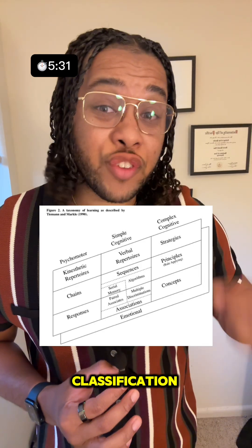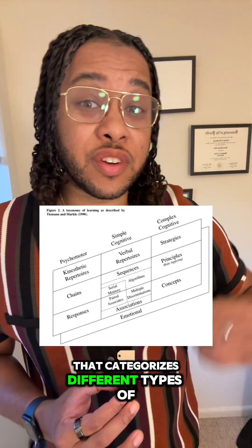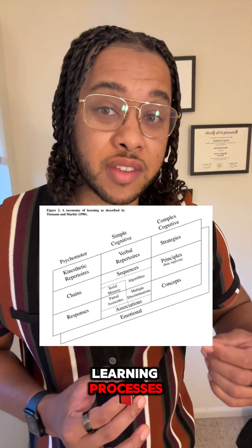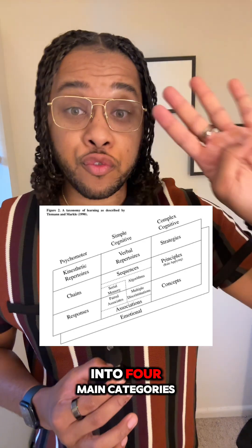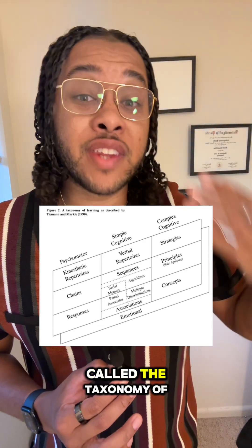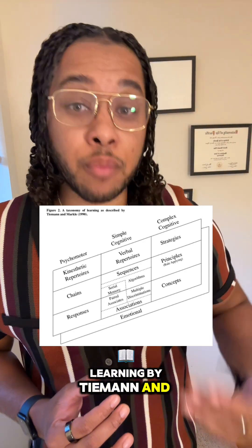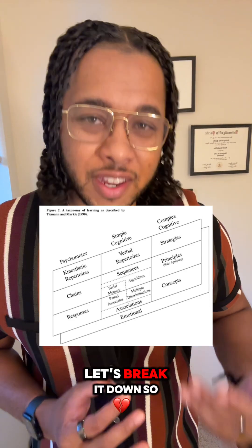This is a hierarchical classification system that categorizes different types of learning processes into four main categories, called the taxonomy of learning by Tiemann and Markle. Let's break it down.